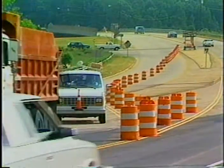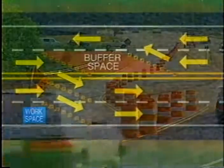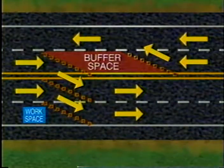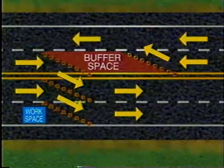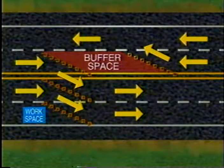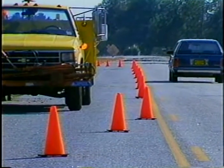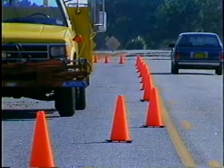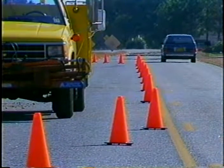Situations occur where one lane of traffic uses a lane that normally flows in the opposite direction. In these situations, a longitudinal buffer space should be used to separate the two tapers for the opposing directions of traffic to help prevent head-on collisions. Lateral buffer spaces separate moving traffic from the work space as well as opposing streams of traffic. The width of this space is determined by engineering judgment and is often governed by the portion of the roadway which is needed to perform the actual work.